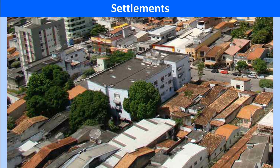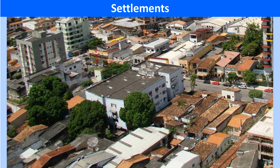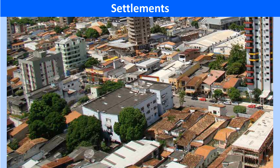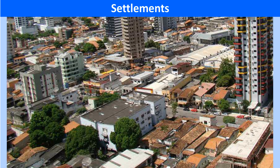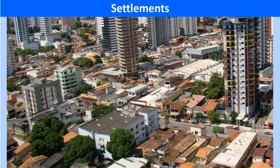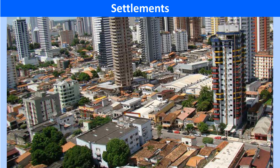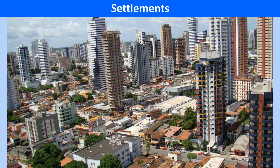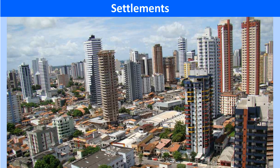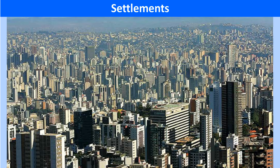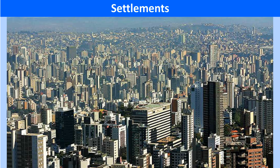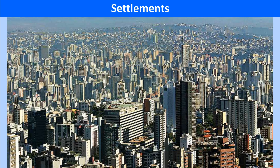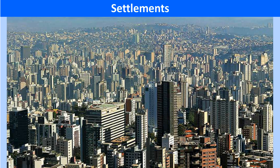Settlements also reflect the political structure of the society as well as the various kinds of economic activities practiced by the residents. Selection of a place for a settlement, its growth and evolution are influenced by a number of factors like the topography of the region, availability of water, fertile soil, favorable climate, trade potential, etc. Depending on their shape, size, pattern, site, function, etc., settlements are classified in various ways.